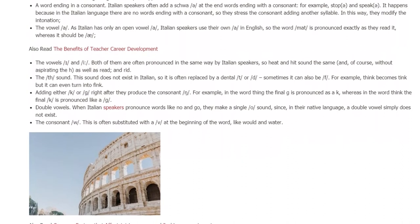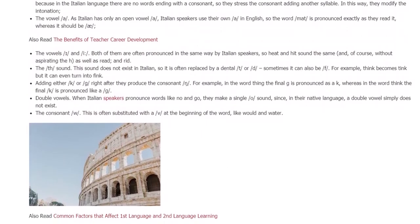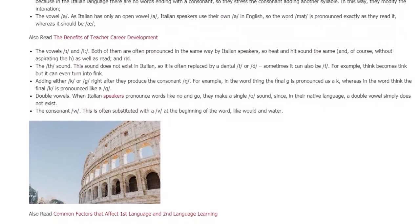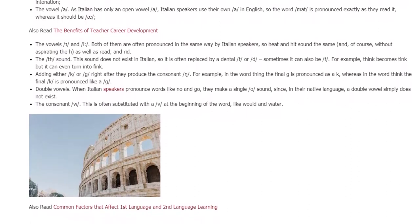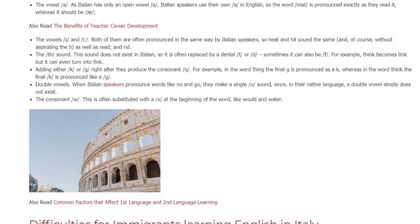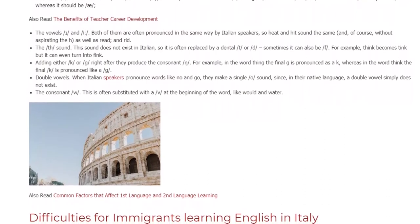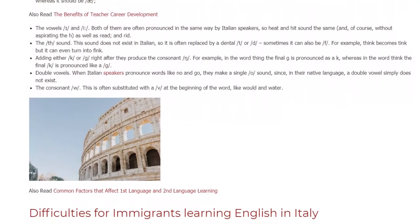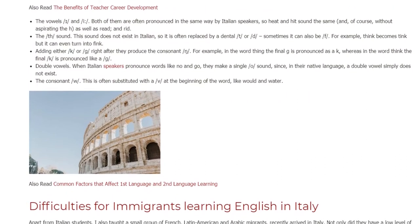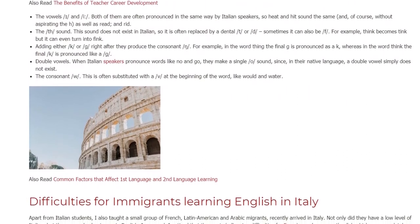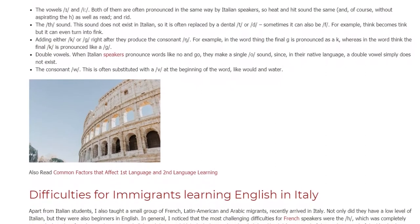Double vowels: when Italian speakers pronounce words like 'no' and 'go,' they make a singular O sound, since in their native language a double vowel simply does not exist. The consonant W: this is often substituted with a V at the beginning of words, like 'wood' and 'water.'